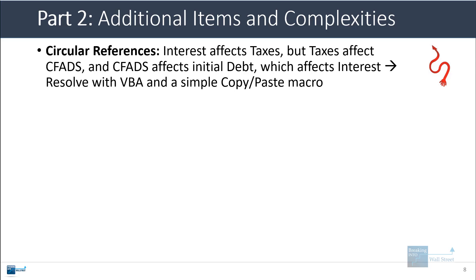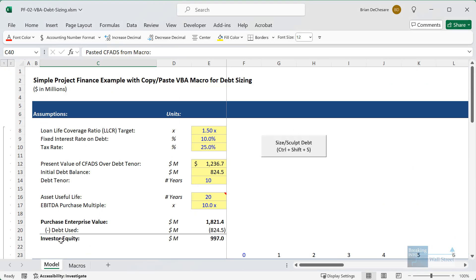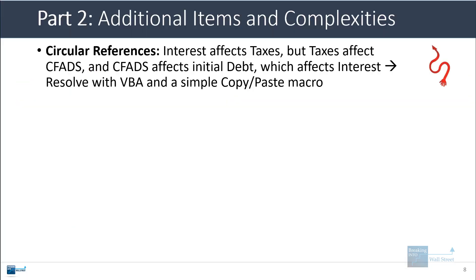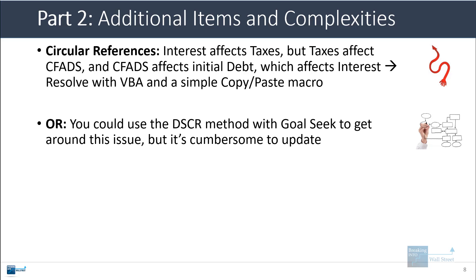With both of these, you still run into issues with circular references because the interest expense affects the taxes, the taxes affect the cash flow available for debt service, but the cash flow available for debt service affects the initial debt balance. You can resolve this in different ways. In the debt sizing and sculpting tutorial, I explained how you can set up a very simple copy-paste macro to resolve this. Another method is to use goal seek with the debt service coverage ratio, though it's quite cumbersome and gets rather annoying to keep updating the model whenever anything changes.